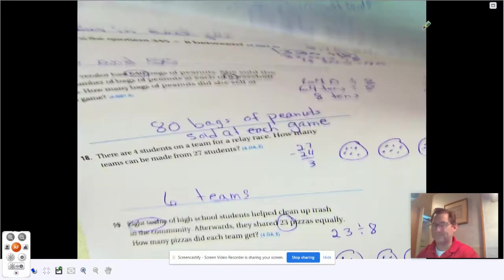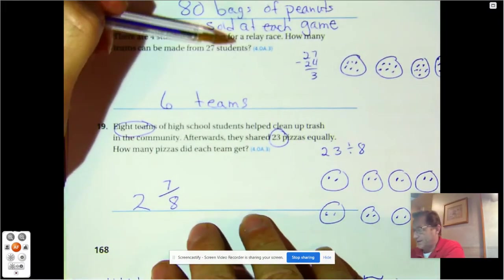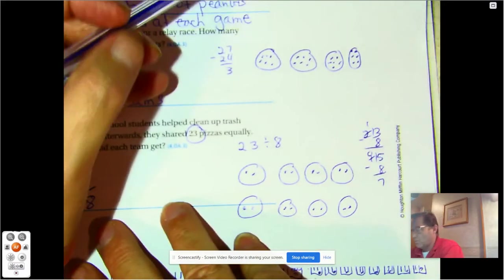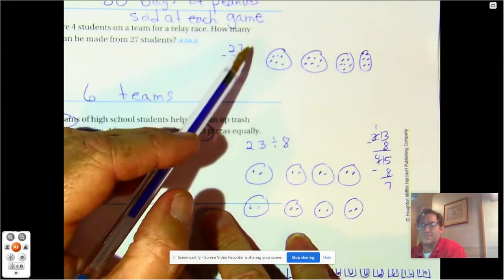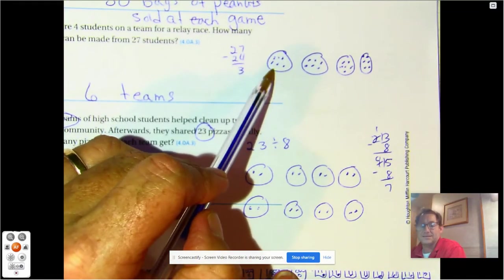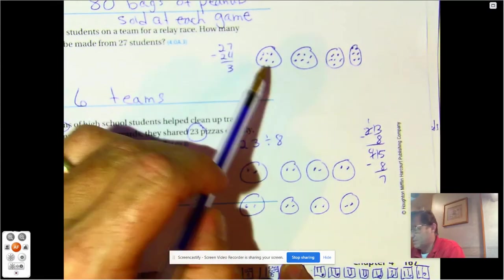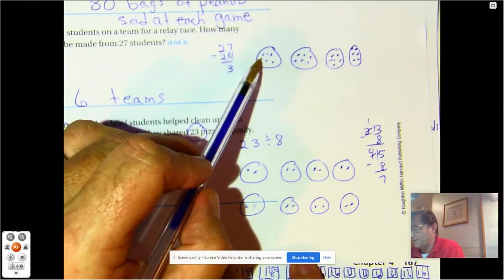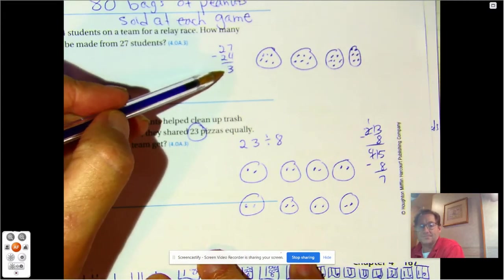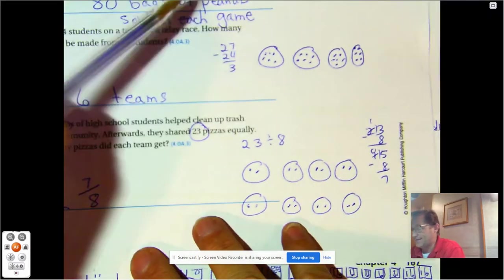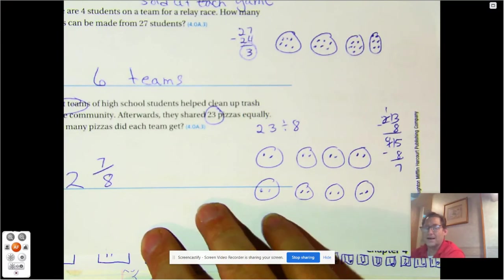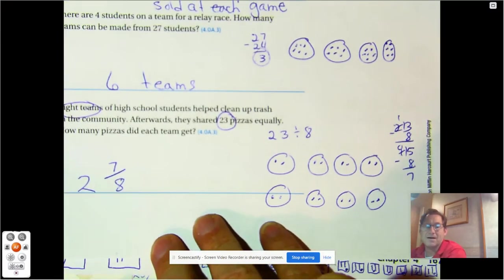Number 18: There are four students on a team for a relay race. How many teams can be made from 27 students? If we have four circles, those will represent the four players. So how many teams of four can I make? I know six times four is 24: one, two, three, four, five, six. Six, twelve, eighteen, 24. 27 take away four leaves me three. So the most teams I can make is six teams of four. The three left over, I can't put on a team. So I can't have a seventh team. So right now we just have six teams.